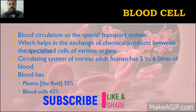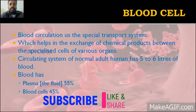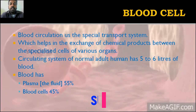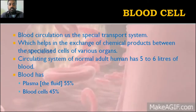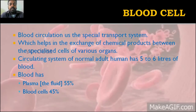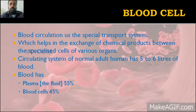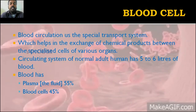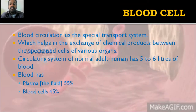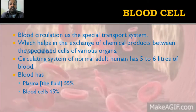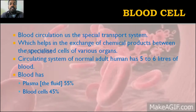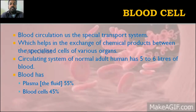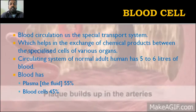Blood is used to help the exchange of chemical products such as salt, calcium, potassium, carbohydrates, and vitamins. These products are transferred to all the organs, and the blood also carries oxygen from the heart and carbon dioxide from the cells. The circulating blood in a normal adult human is around five to six liters, which circulates through the entire human body.